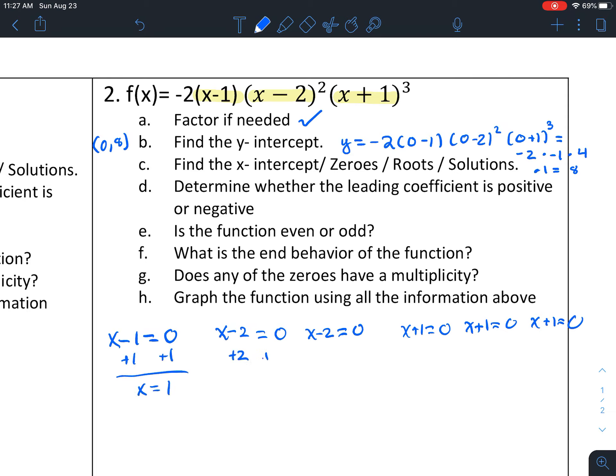So here we have x equals 1. Here we have x equals 2, and here we have x equals negative 1, and that happens three times. So our points that we have are (1, 0) and (2, 0) and (-1, 0) for our x-intercepts.